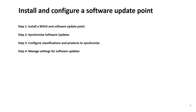If you have decided to deploy updates to your clients using SCCM, you must have the Software Update Point role installed correctly. The steps are: install WSUS, install the Software Update Point role, then synchronize software updates, configure the classifications and products for synchronization, and manage the software update deployment settings.